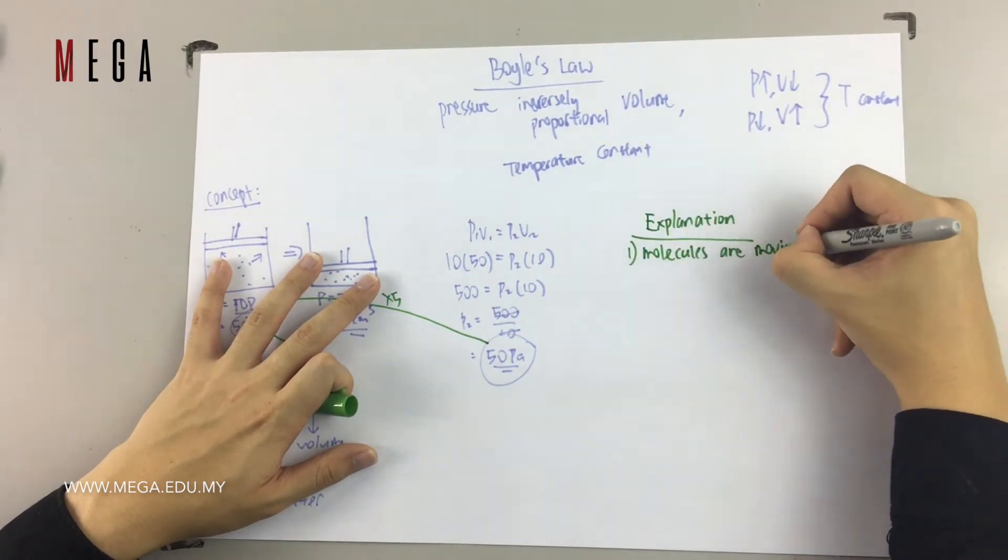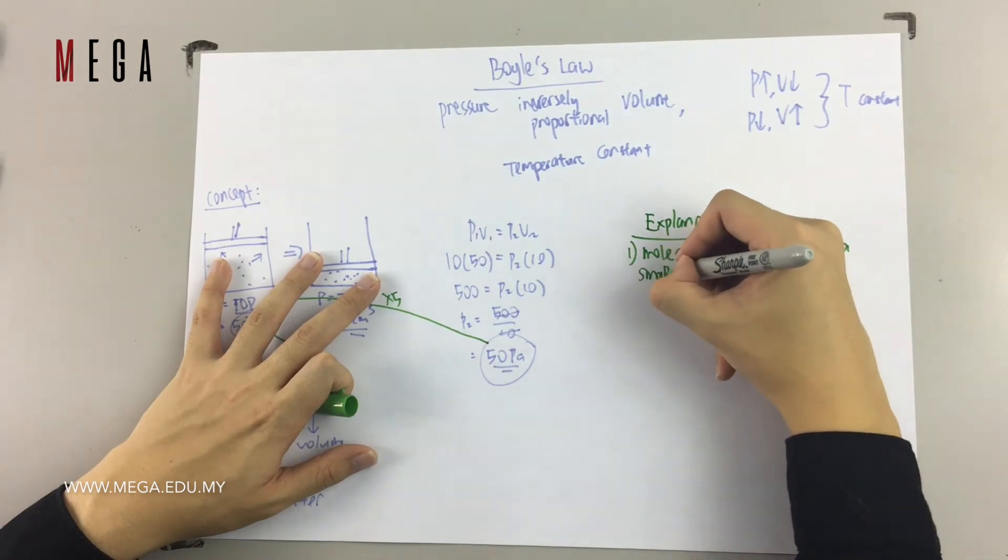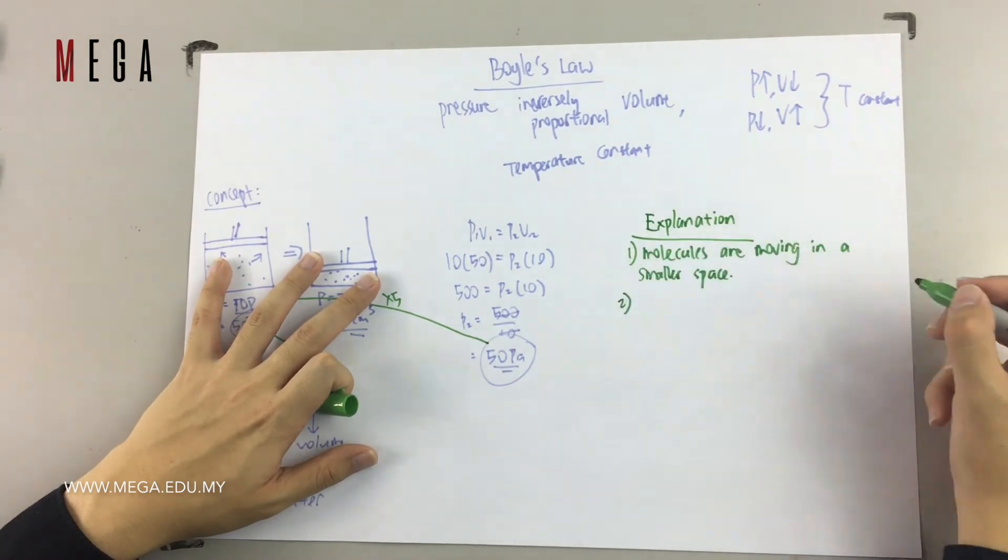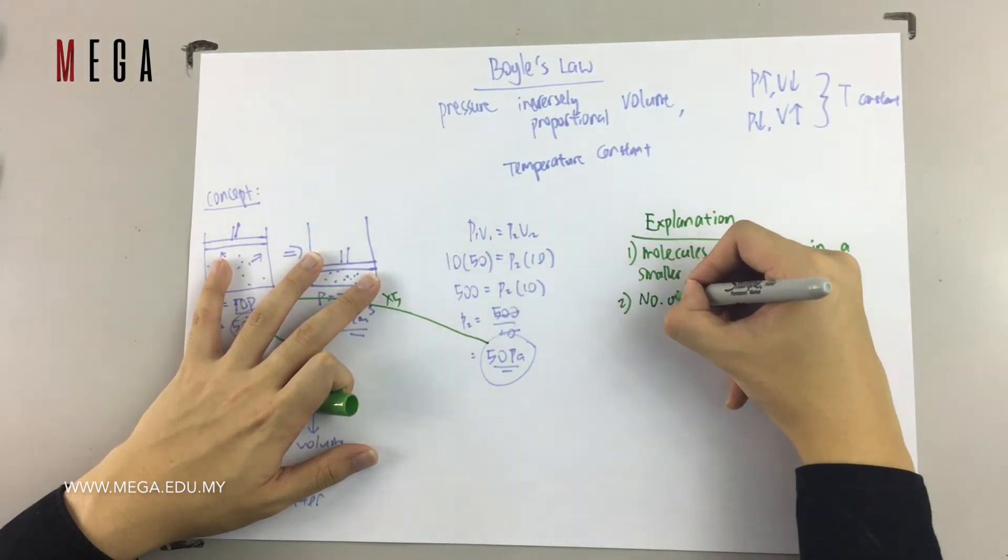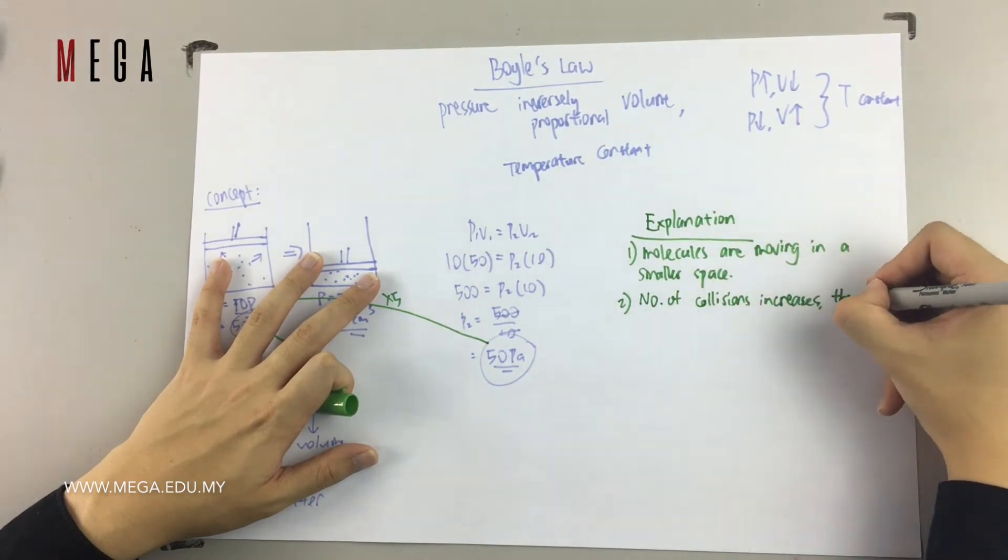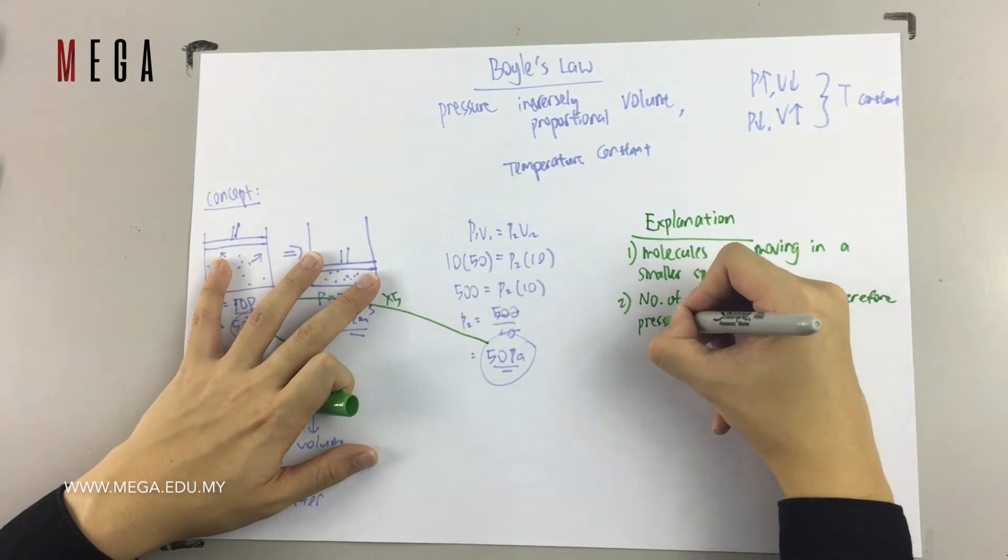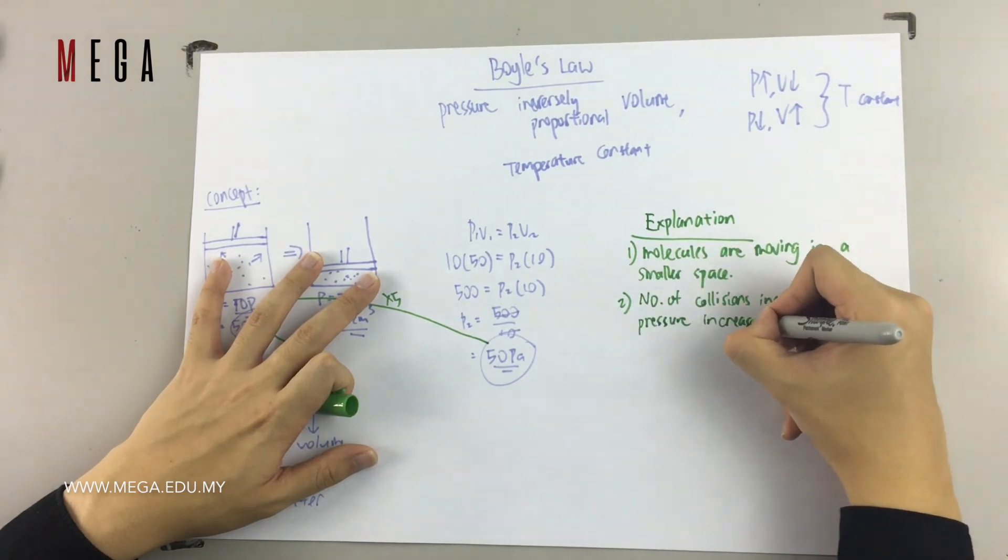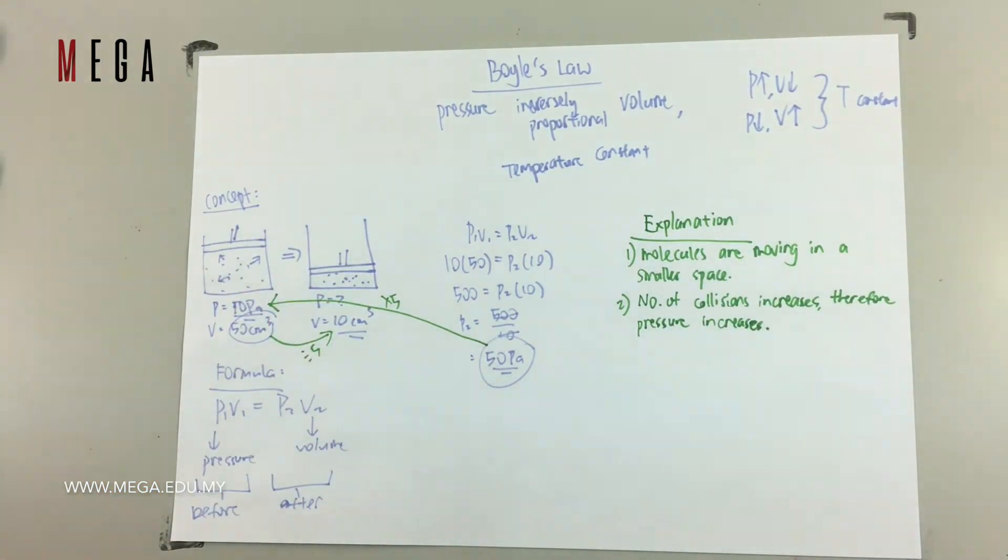Why does it happen like that? It's because your molecules are moving in a smaller space, therefore they have more number of collisions. This is the reason why pressure will increase. These two points are the most important points to help you explain why Boyle's Law happens in that way.